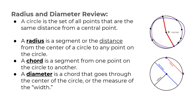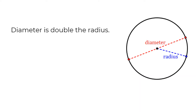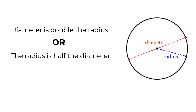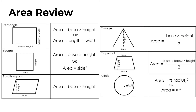We measure circles with radius and with diameter, and they are related. The diameter is twice as long as the radius — the radius goes from the center to the edge, while the diameter goes all the way across. So the radius is half of the diameter, and the diameter is double the radius. In area problems, you'll use the radius to calculate, but sometimes you're given the diameter, so divide it in half to get the radius first.